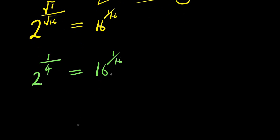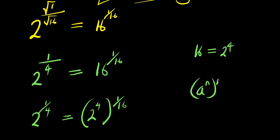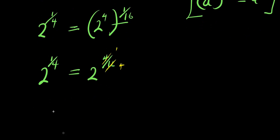Recalling that 16 = 2^4, the right side becomes (2^4)^(1/16). Applying the identity (a^n)^m = a^(n×m), we multiply exponents: 2^(4 × 1/16) = 2^(4/16). Simplifying, 4/16 = 1/4, so the right side is 2^(1/4).